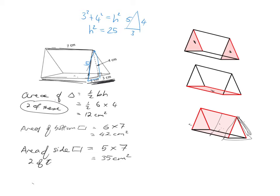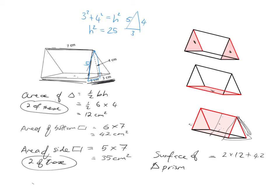And again, in total we want two of these side rectangles. So when we work out the surface area of the triangular prism, it's going to be two lots of 12 for the front and back triangles, one lot of the bottom rectangle, and two lots of the side rectangle. So it's going to be 24 plus 42 plus 70, which gives me 136 centimetres squared.